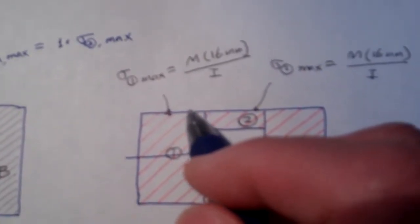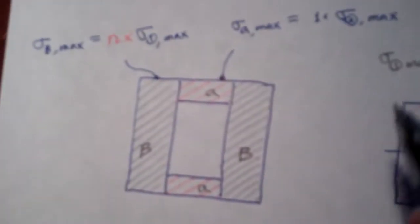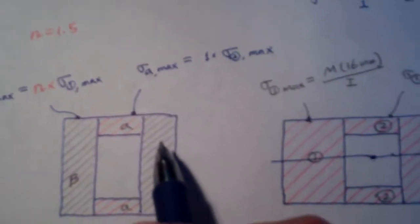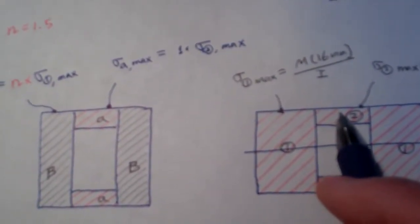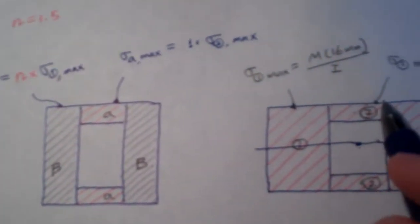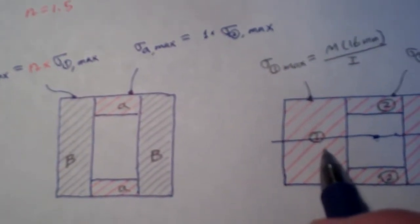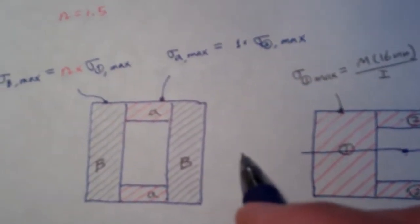And once we obtain the calculation of the stresses on the transform, we translate it into the original. Material 2 which represents the aluminum, that is the same. For brass, the brass has been transformed. So here we have to transform back.